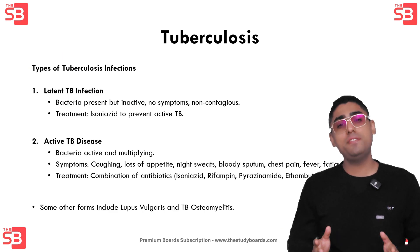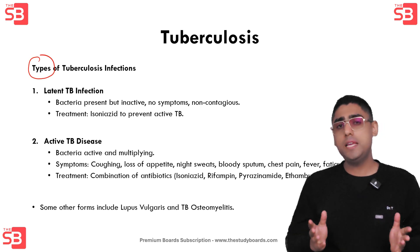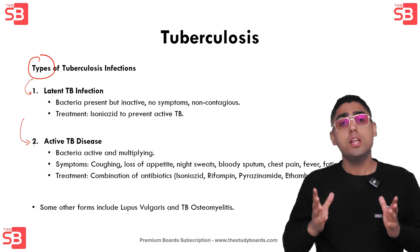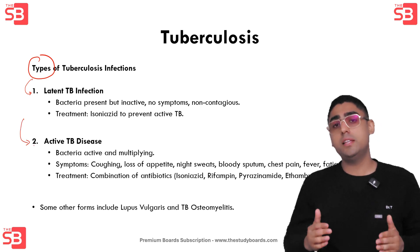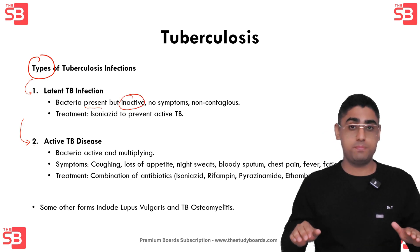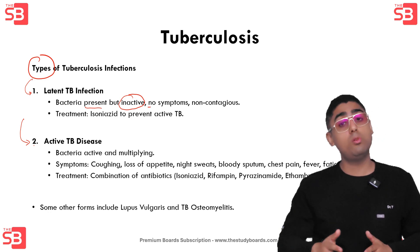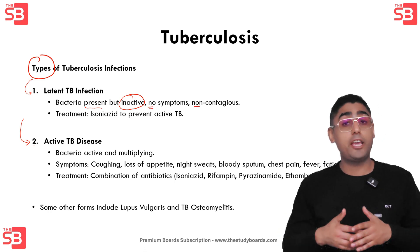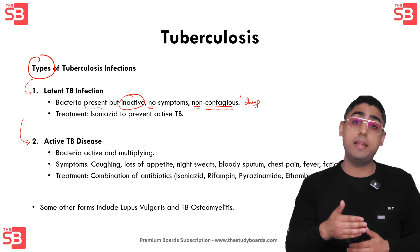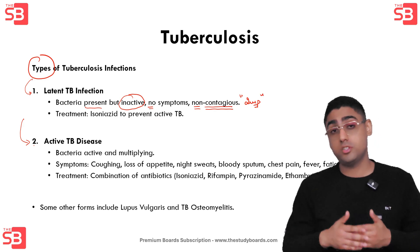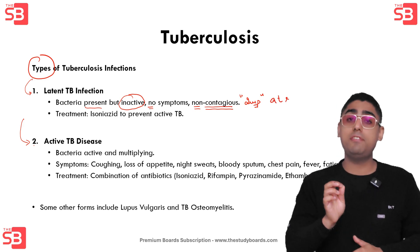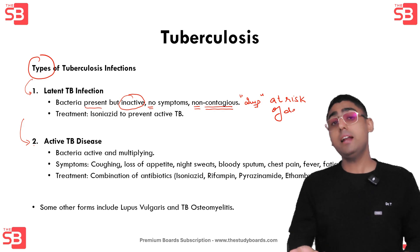TB can present in two main forms: latent and active. In latent TB infection, the bacteria is present in the body but remains inactive. People with latent TB don't show any symptoms and cannot spread the disease to others — this is an exam question. However, they are at risk of developing active TB later in life if the bacteria becomes active.